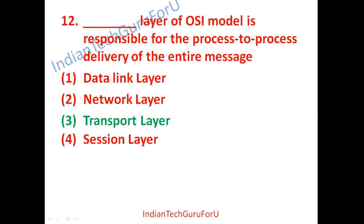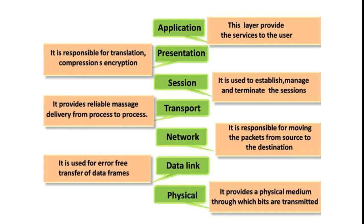Physical layer: it provides a physical medium through which bits are transmitted. Physical medium includes wires, coaxial cable, fiber optic cable, and twisted pair cable. Devices used at the physical layer include hubs and repeaters.